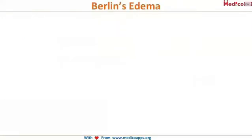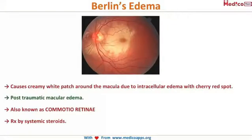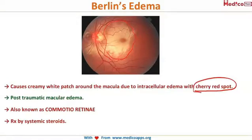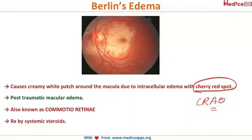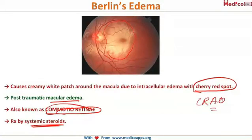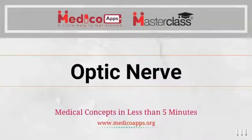Berlin's edema presents as a creamy white patch around the macula due to intracellular edema. It can also show a cherry red spot, similar to what we see in CRAO. It is a post-traumatic macular edema also known as commotio retinae, and the treatment is systemic steroids.